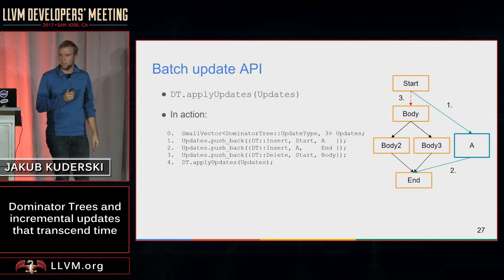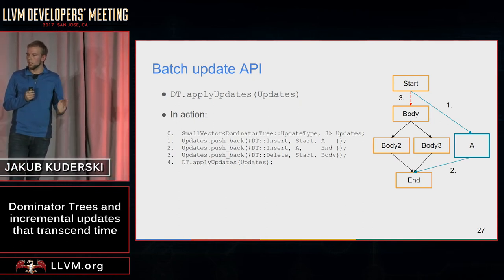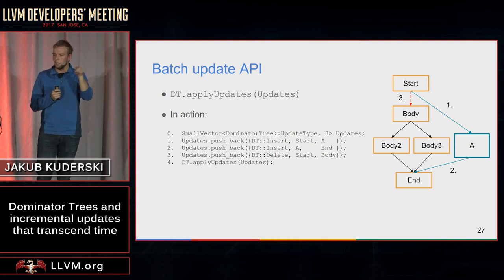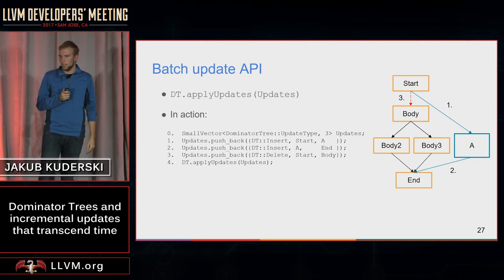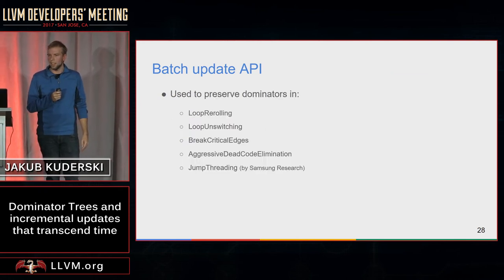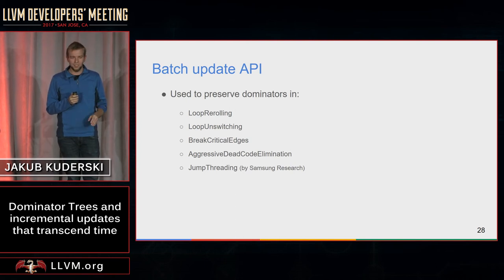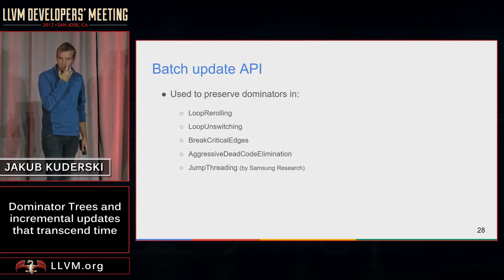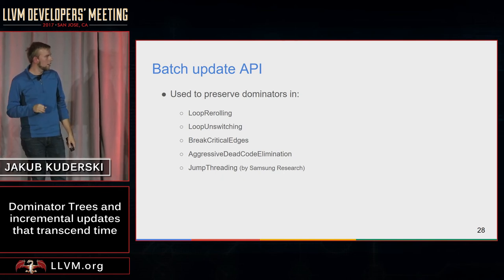Here's the new batch update API. We want to make a bypass to body2 and body3, and insert a new basic block connecting start to exit. All we have to do is tell the updater that we inserted an edge from start to A, from A to end, and disconnected body from start. I updated the transformations to use the batch update API, and this time it actually works — a great step forward. There's also another pass updated — jump threading — by Brian from Samsung. I think it landed recently and was reverted, but it will make it to LLVM in the very near future.